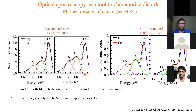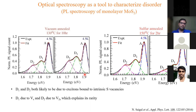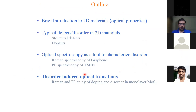We assign the D1 feature to single sulfur vacancies and D2 features to bi-sulfur vacancies, which are the second most common defects. Since D2 features are not seen in all samples, this is consistent with their assignment to bi-sulfur vacancies. This example shows that PL spectroscopy combined with polarization dependence, temperature dependence, and annealing experiments can reveal the nature of defects in 2D materials.